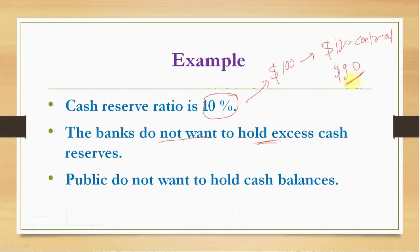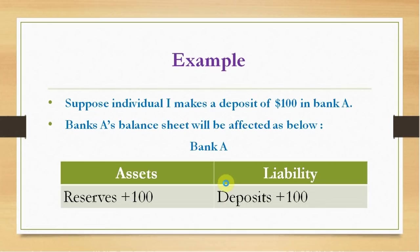The banks do not want to keep any dollar out of the $90 with themselves — they want to lend all the $90. Thirdly, we assume that the public also do not want to hold cash balances; as soon as they get cash balances, they immediately deposit the balance in the bank.